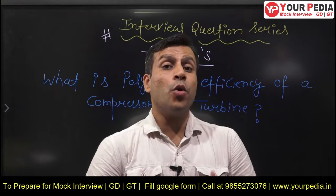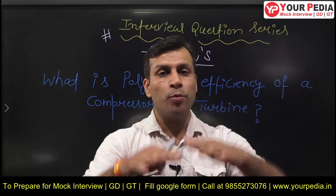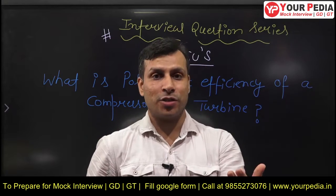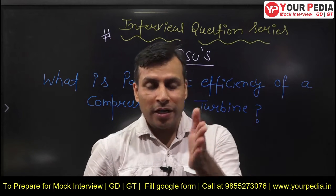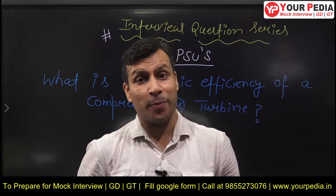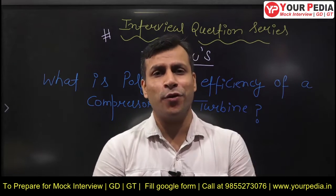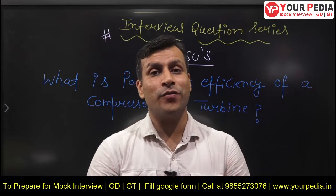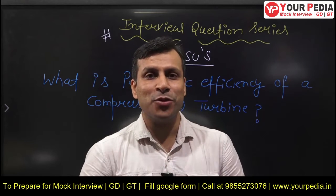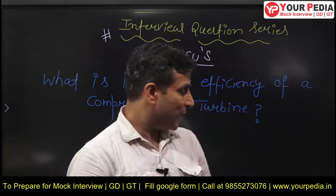Polytropic efficiency is a more universal parameter which is used to compare two or more compressors or turbines operating with different pressure ratios - to compare their performance, we use polytropic efficiency. Because this polytropic efficiency is independent of the initial conditions, independent of the pressure ratios, it depends on the n value only. Let me discuss how we can actually get the expression for polytropic efficiency - that is very important.